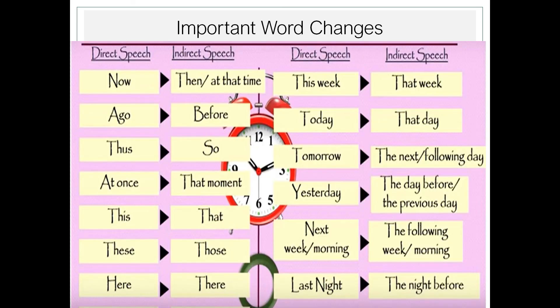Now let's learn about words indicating nearness in time and place and how they are replaced. Please note down these important word changes: 'now' becomes 'then' or 'at that time,' 'ago' becomes 'before,' 'thus' in indirect speech becomes 'so,' 'at once' becomes 'that moment,' and 'this' becomes 'that.' These changes are needed because time has passed between the moment of speaking and the time of the report, so we change tenses and time and place expressions.